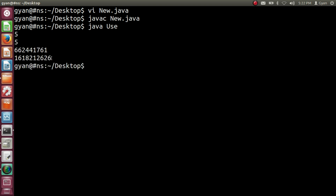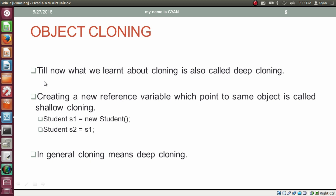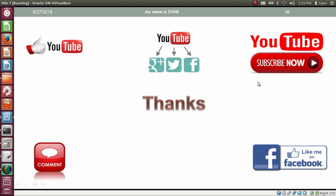There are two types of cloning: deep cloning and shallow cloning. Everything we studied about cloning in this video is called deep cloning. In previous sessions, we learned that we can create an object and store its reference into another reference variable — both pointing to the same object. Creating a new reference variable that points to the same object is called shallow cloning. In general, when someone talks about cloning, they mean deep cloning. That's all for this video — don't forget to like, share, subscribe on YouTube, like the Facebook page, and leave comments below. Thanks for watching, see you in the next video.